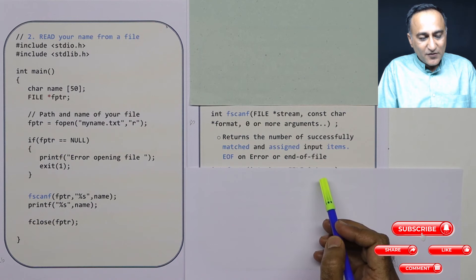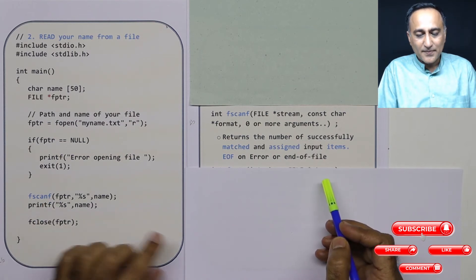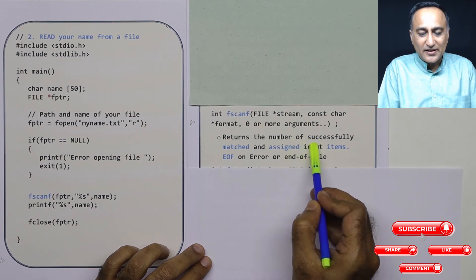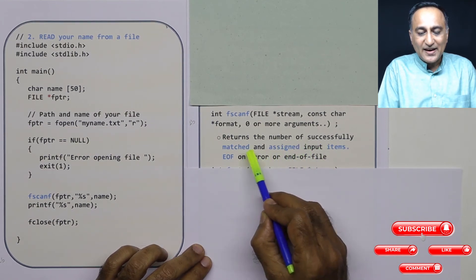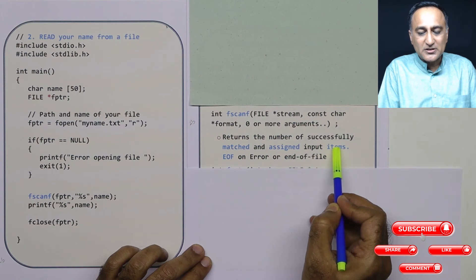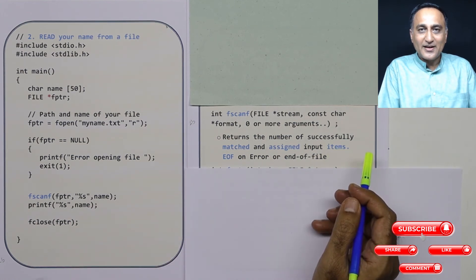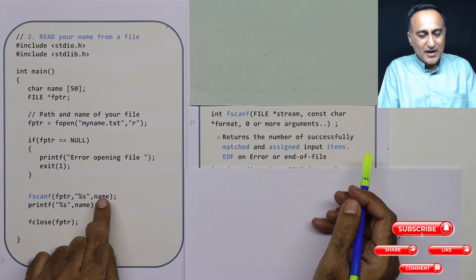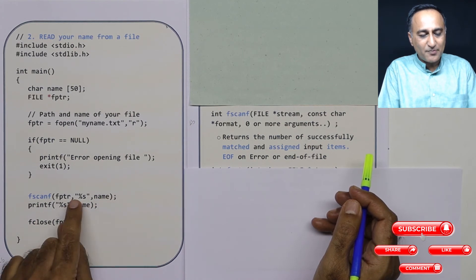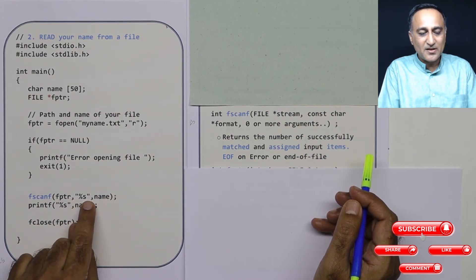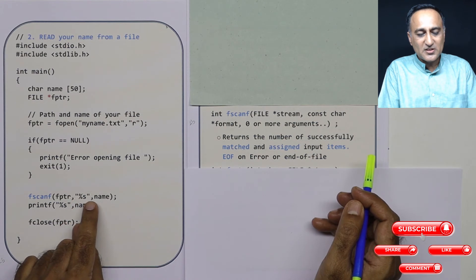Now, if fscanf is successful in reading, then what it will return is it will return the number of items matched and assigned to input items correctly. Let me explain what I mean. Suppose I have name1 and name2, I have %s and %s. So in this case, one %s matches with name1, the second %s matches with name2.